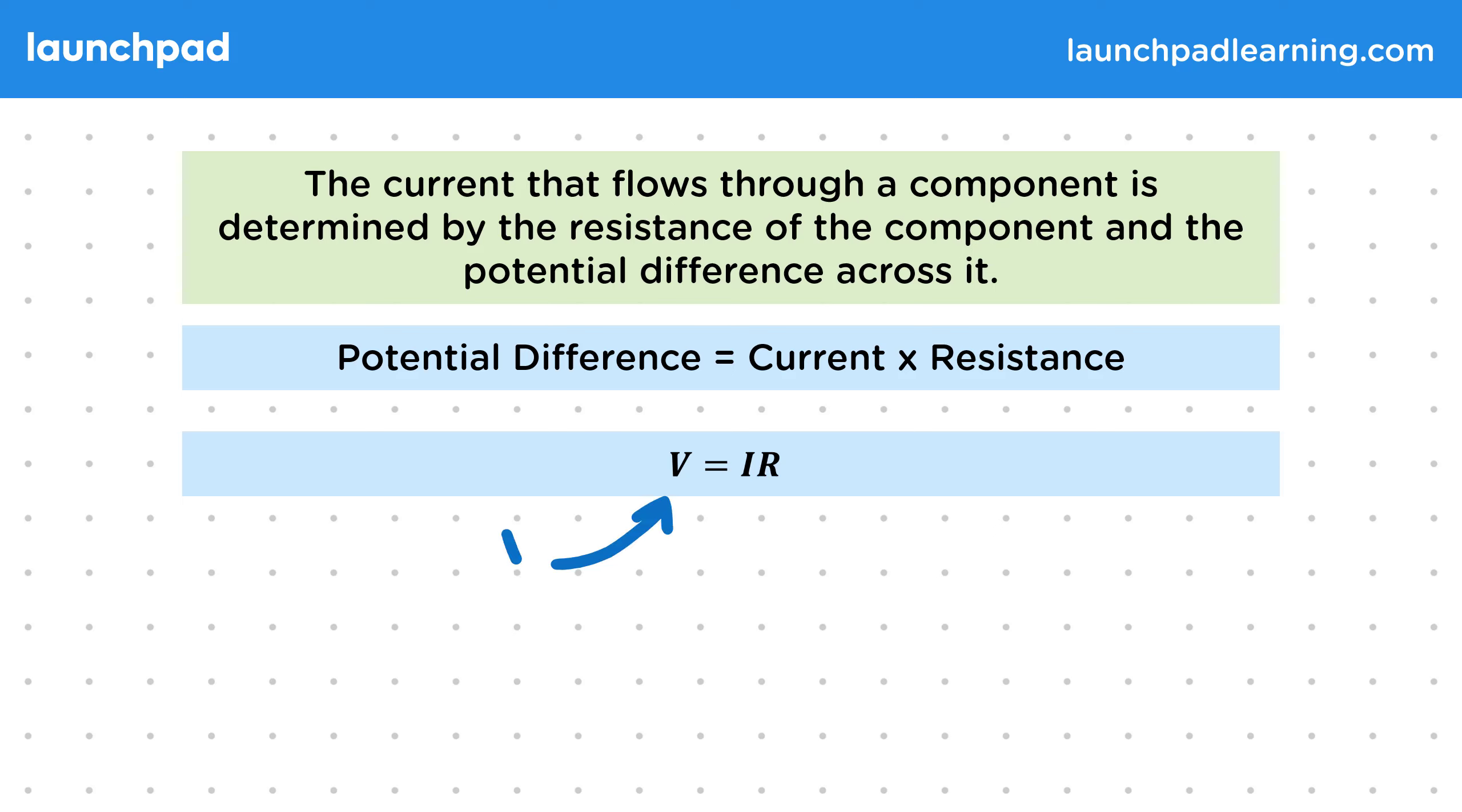The units of potential difference are volts, the current is measured in amps, and the resistance is measured in ohms.